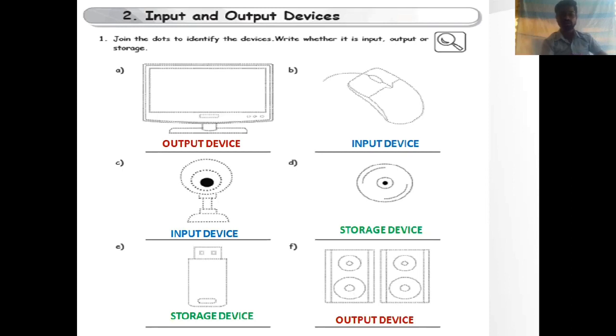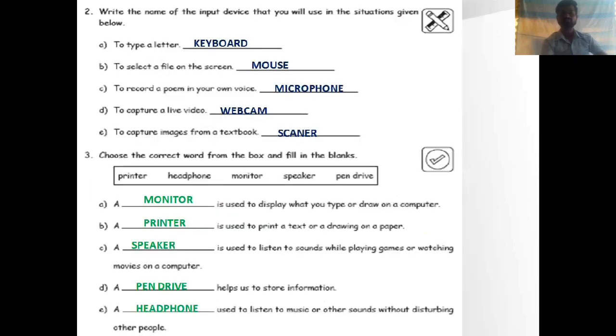Question number 2: Write the name of the input device that you will use in the situation given below. You need to write down the device name here. A, to type a letter: keyboard. With the help of keyboard we can write letters and numbers. B, to select a file on the screen. If you have to select any file or any icon on the screen, with the help of mouse you can select that icon or that file, or you can open the file also.